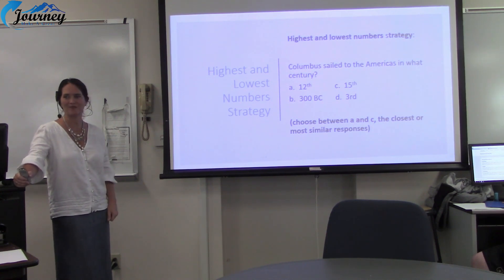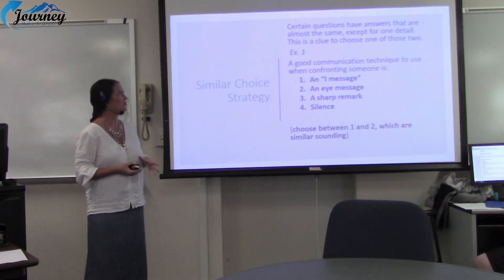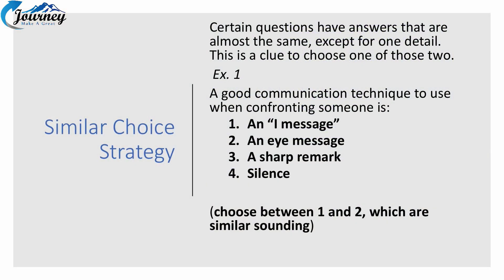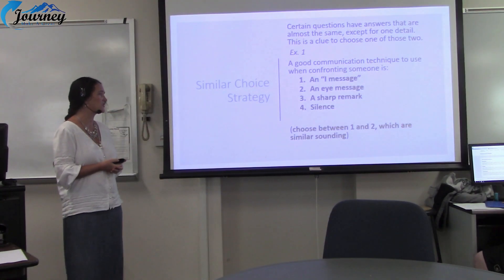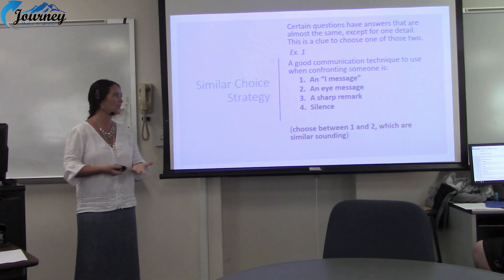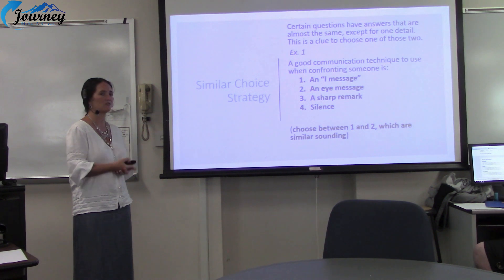Certain questions have answers that are almost the same except for one detail — this is a clue to choose one of those two. When two choices are very similar, look closely at just those two. For example: 'A good technique to use when confronting someone' — you look at choices one, two, three, and four. The two that are similar-sounding are one and two, so you would want to choose one of those. Another example: 'A chloroplast contains' — you'd want to choose between A and D because they both contain the root 'chlor,' as in chloroplast.